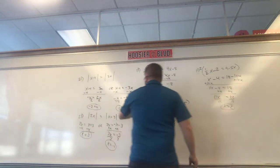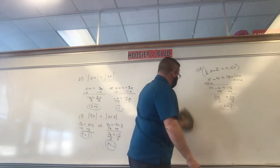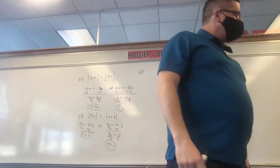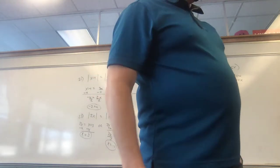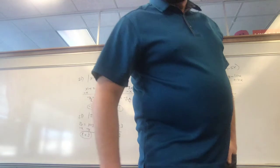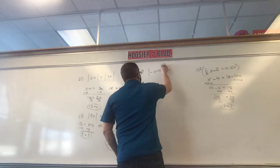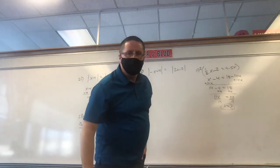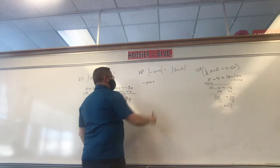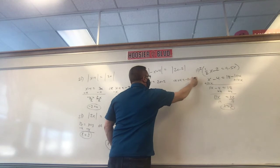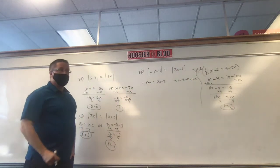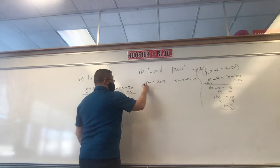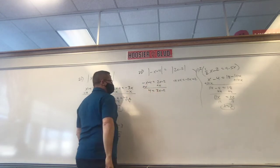Two more to go. Number 25. My goal is not to say you get this assignment done today — we're starting today. My goal is to get through all my stuff today so that tomorrow during your virtual day you can work on it. Negative x plus 4 equals absolute value of 2x minus 2. So negative x plus 4 could equal 2x minus 2, or negative x plus 4 could equal negative 2x plus 2. Solve each one.